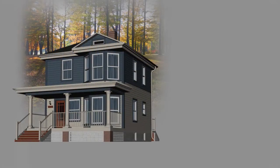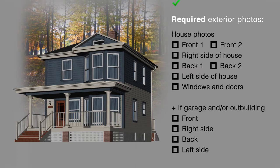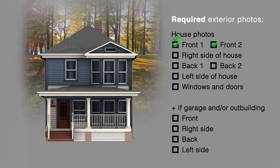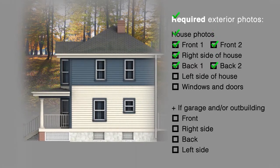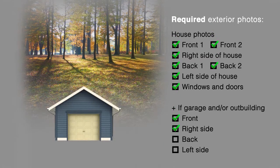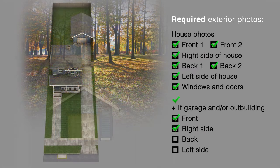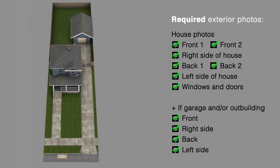Now that you know the rules, let's review the different photos that are required throughout the property. We will start with the exterior. Photos must be taken of all sides of the property, including each side of the house, as well as all windows and doors. This also applies to any outbuildings present at the property, such as sheds and detached garages. For best practices, photos should be taken from both angles, including front to back and back to front.